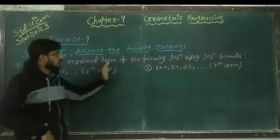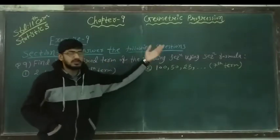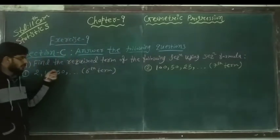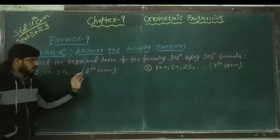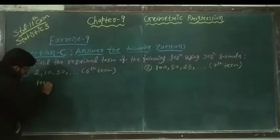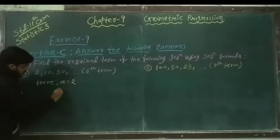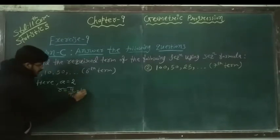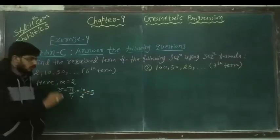Find the required term of the following sequence using the sequence formula. The first sequence is 2, 10, 50, and so on. We have to find out the sixth term. So here the first term A is equal to 2. R is given by second term divided by first term, which equals 10 divided by 2, so the value of R is 5.